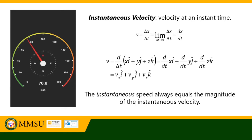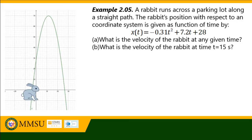For the word problem: a rabbit runs across a parking lot along a straight path. The rabbit's position with respect to a coordinate system is given as a function of time by the given equation. We need to find the velocity of the rabbit at any given time, and the velocity at time t equals 15 seconds. For the first part, we determine the instantaneous velocity of the rabbit.